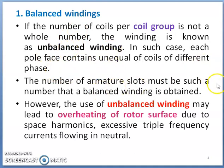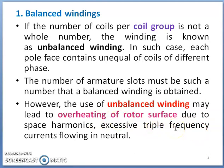The number of armature slots must be such that a balanced winding is obtained. When the number of slots are designed for a given diameter of machine and output rating, the winding should be a balanced one. The adverse effects of unbalanced winding include overheating of the rotor surface due to space harmonics, and excessive triple-frequency currents — three times the supply frequency — flowing in the neutral.